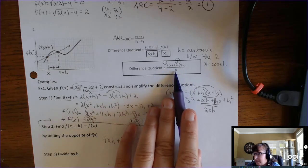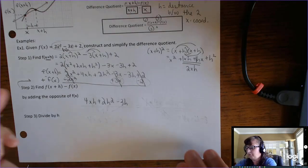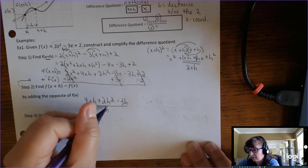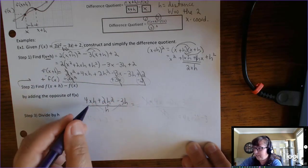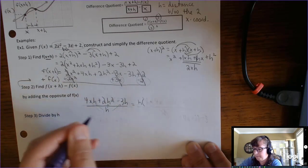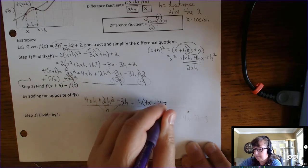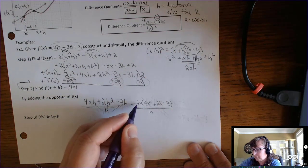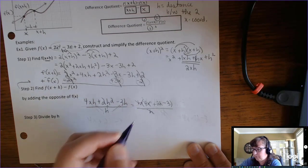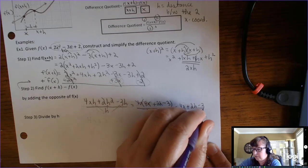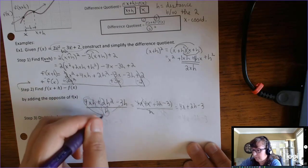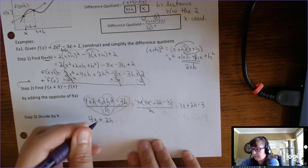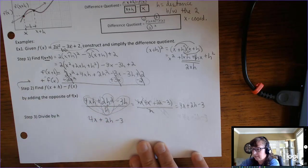The last step is to divide everything by h. Factor out the h from the numerator: h times 4x plus 2h minus 3, all divided by h. The h's cancel, giving a difference quotient of 4x plus 2h minus 3. Alternatively, divide each term individually: 4xh over h is 4x, 2h squared over h is 2h, and negative 3h over h is negative 3.